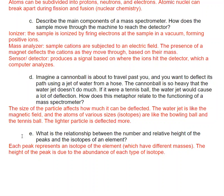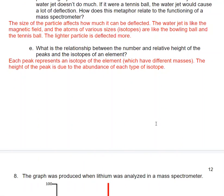So what is the relationship between number and relative height of the peaks? Each peak represents an isotope of the element, which has a different mass. The height of the peak is related to the abundance of each type of isotope.